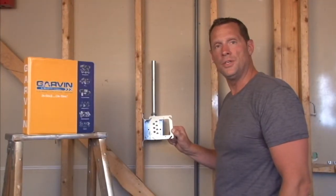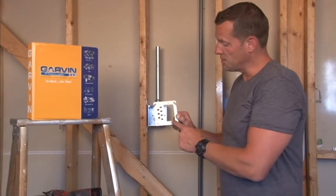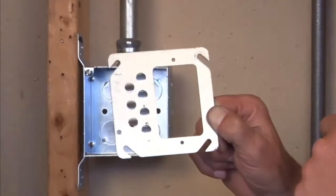Garvin Industries part number 52C09 is an offset plaster ring with 632 tapered holes.